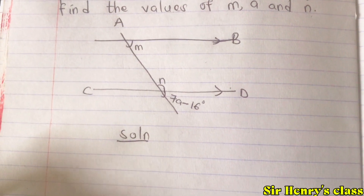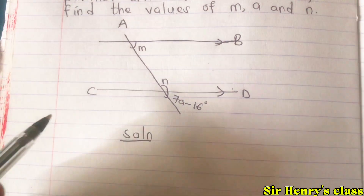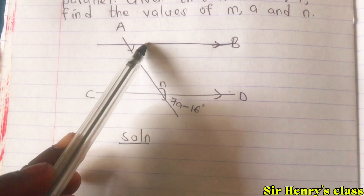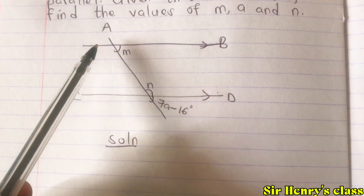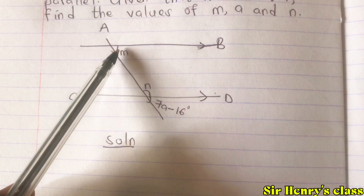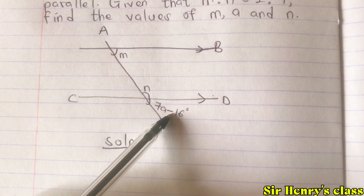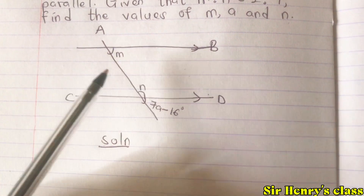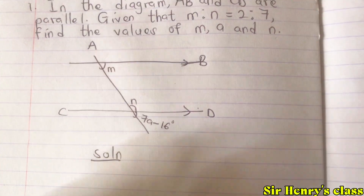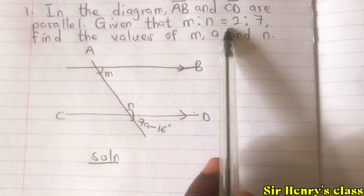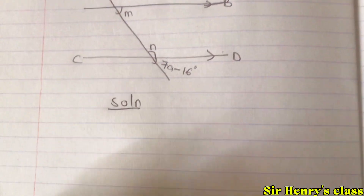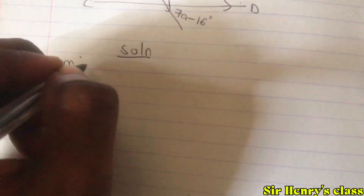We can recall that in angles we have what we call alternate angles, and they are equal — you can draw a Z shape and the angles are equal. We also have corresponding angles: m and 7a minus 16 are corresponding angles. We can apply corresponding angles, alternate angles, and we also have a ratio here that we can apply. Let us give respect to the ratio m is to n equals 2 is to 7.